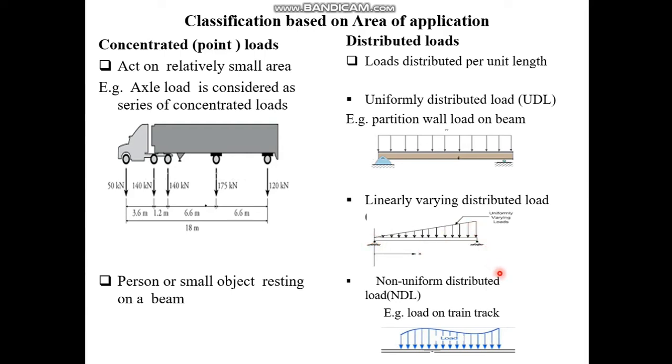The last classification is non-uniform distributed load. Such type of loads are unevenly distributed throughout the structure. An example for such type of load is load on a train track.